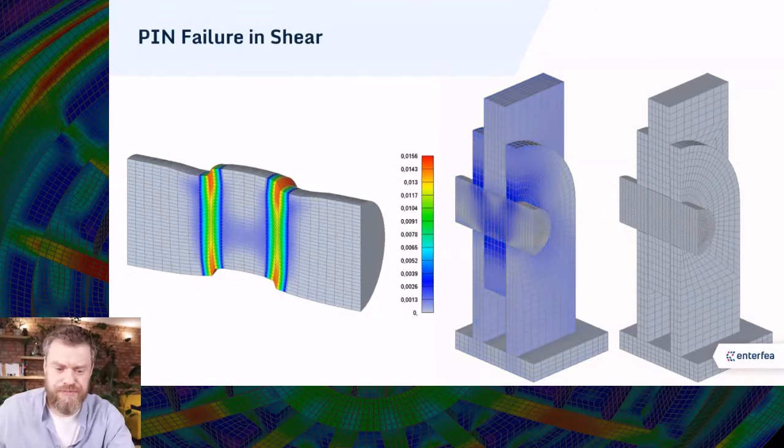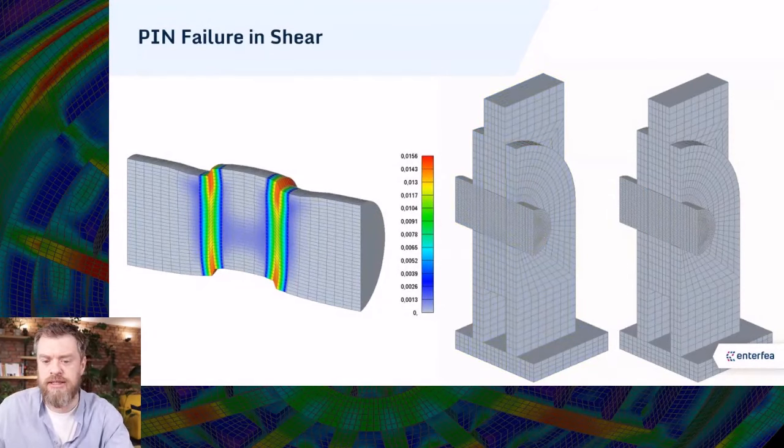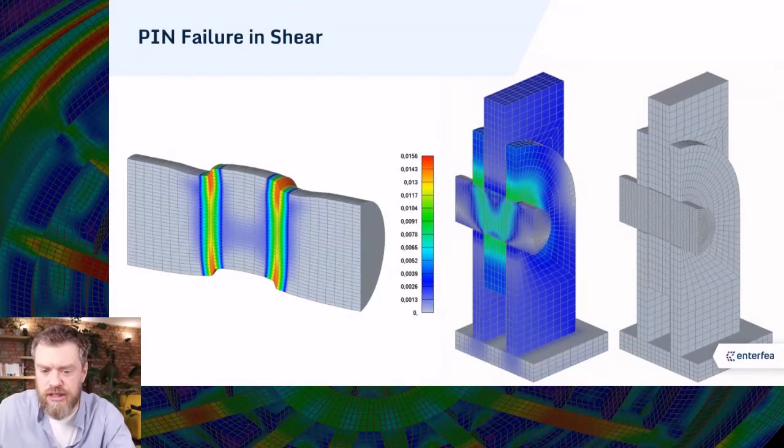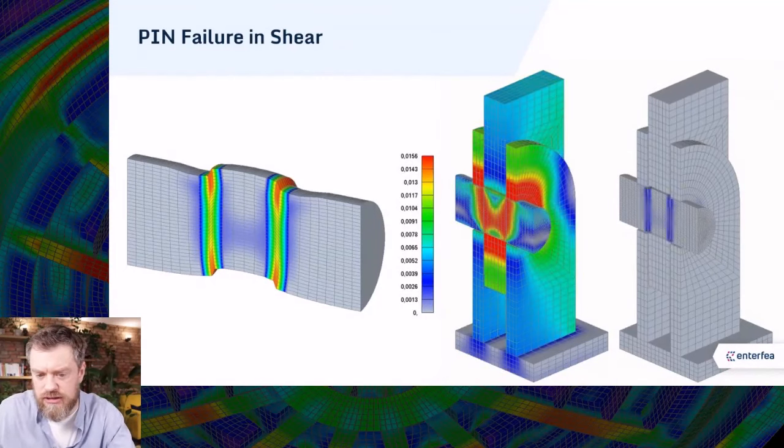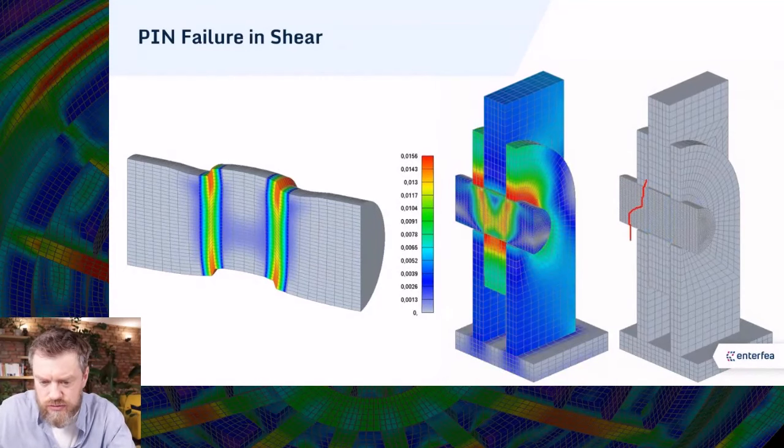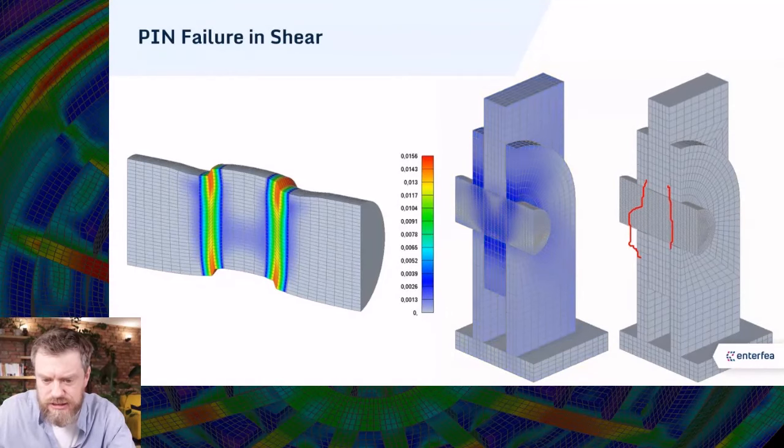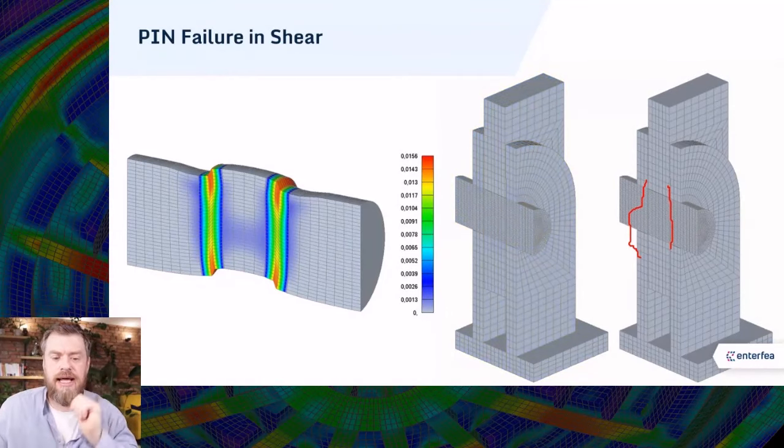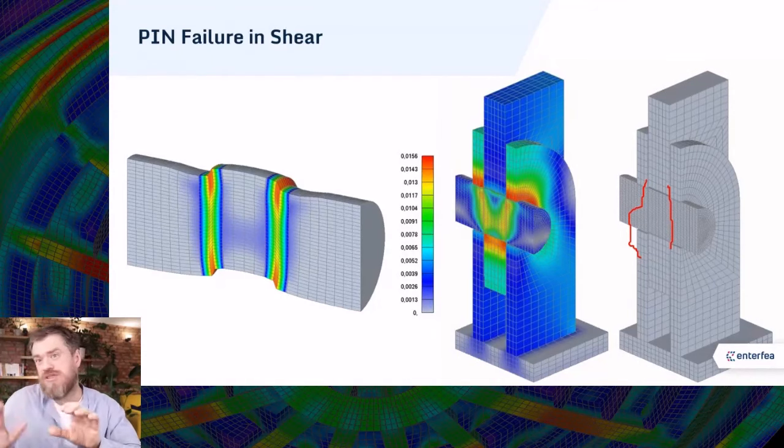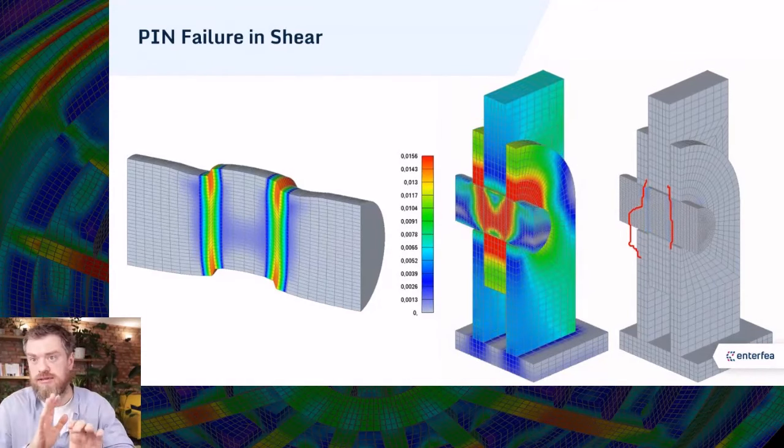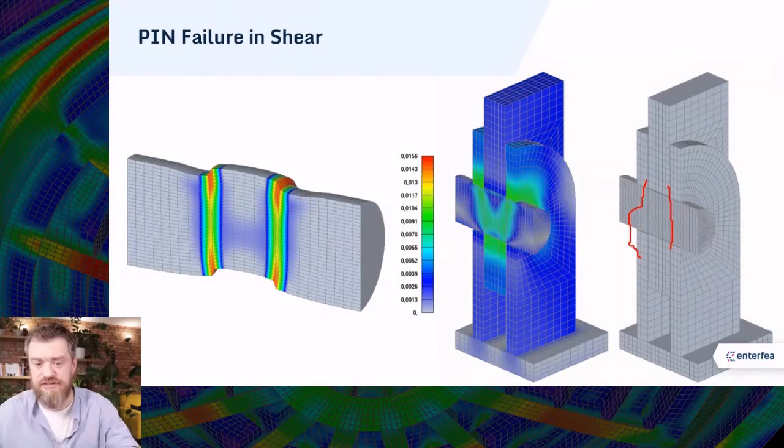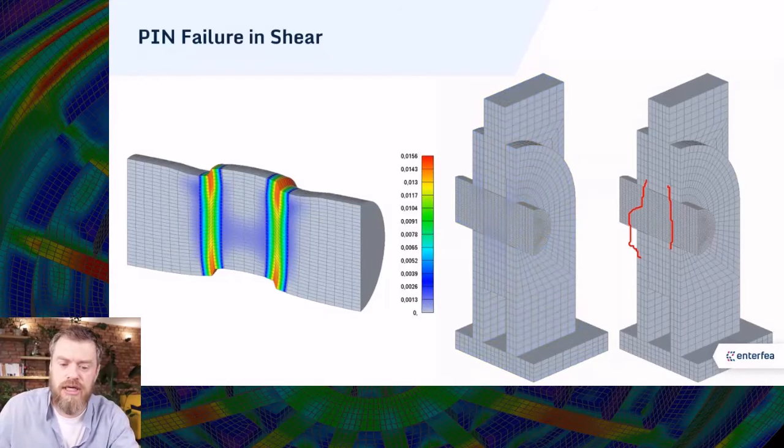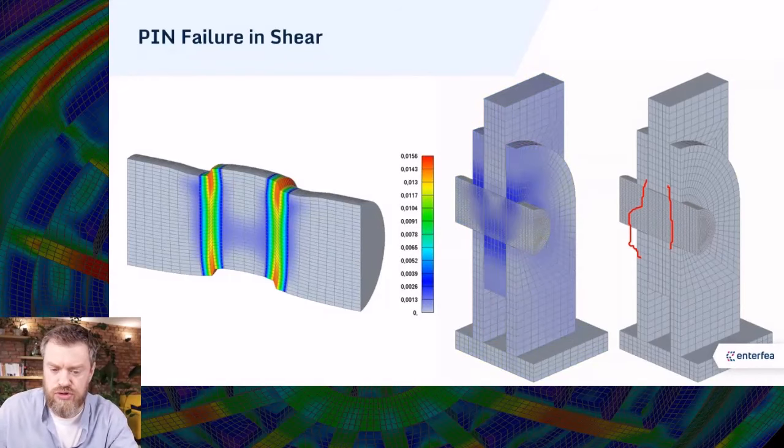This is because when you have a pin, it firstly accumulates certain stress, and then as it starts to fail in those planes here, it actually goes very quickly because it's almost entire area in one go. So it's like nothing, nothing, everything, and it fails, and this is why it goes so quickly.